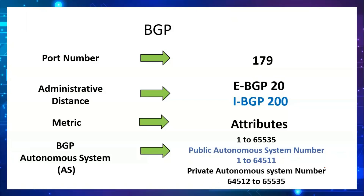In BGP, AS numbers work similarly. Public autonomous system numbers are generally used in ISPs on the internet-facing side, while private autonomous system numbers are used within an organization or within the ISP internally. The private AS number range starts from 64512 and ends at 65535.